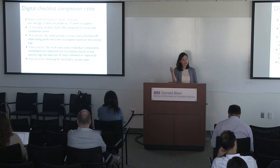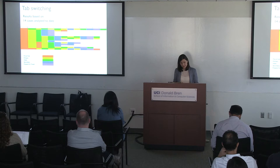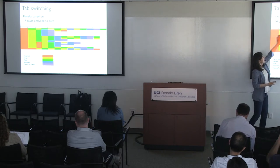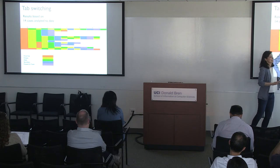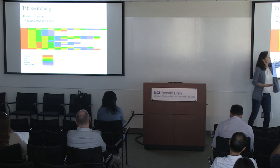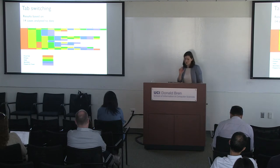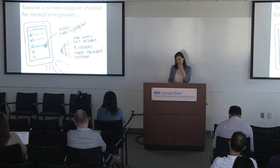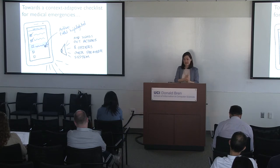There's also a lot of out-of-order checking for secondary survey tasks, which is pretty uncommon. In terms of tab switching — something we can follow in the logs — some are following a very clean pattern: pre-arrival, primary, secondary, prepare for travel. Based on 14 digital cases with full data, you also have a lot of switching between tabs. All of these have implications for how we move toward adaptive design and what it really means for design.